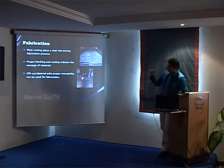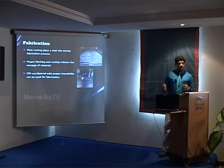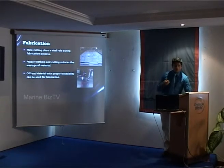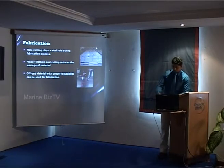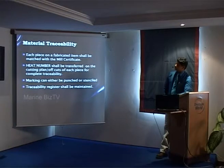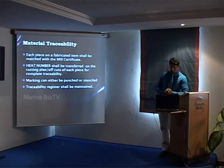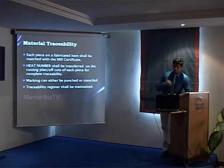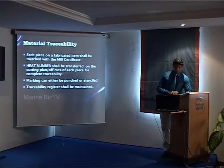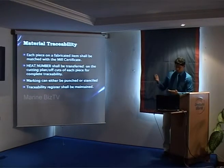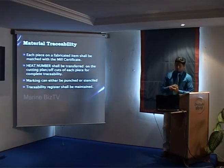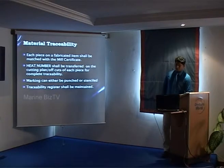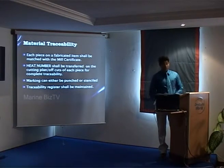Ensure that whatever piece it is — half-cut or full plate — proper marking has been made. Even on off-cut material with proper traceability, it can be reused; you don't need to put it on the scrap. Each piece fabricated shall be matched with the Mill certificate, which is very important in material control. Heat numbers shall be transferred onto the cutting plan and off-cuts so that full traceability is maintained. Marking can be done by plasma cutting or even by punching, ensuring all heat numbers are transferred to each plate.